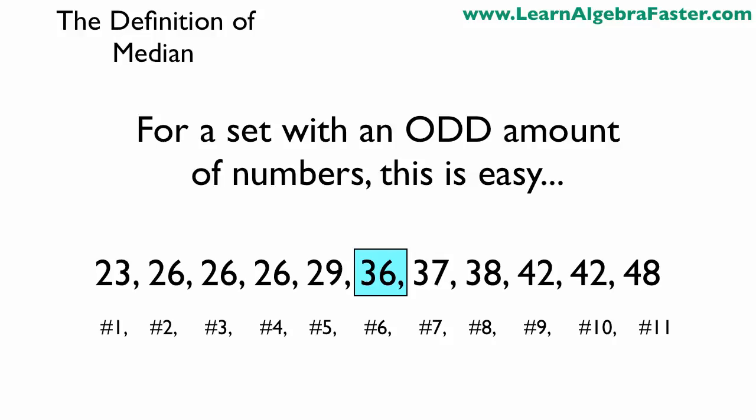There's a little catch involved. For a set with an odd amount of numbers, the median is pretty easy. In this example, we have 11 individual numbers, so we find the one that's directly in the middle, which is the sixth number. The median of this set is 36.